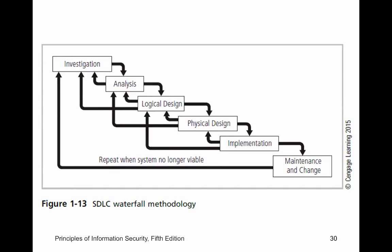Now we're going to see the six stages. We have investigation — what do we need to do? Then we analyze it. We come up with a logical design — here's what we want it to do. And now we actually take that logical design and implement it physically. Rose State just implemented a brand new fiber optic network. The logical design might be: we want to connect all buildings with fiber optic cable.